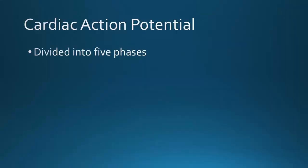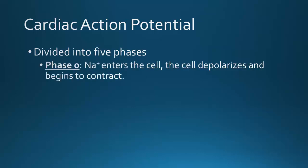We're going to talk about the five phases of the cardiac action potential. If you're using the eighth edition of Nancy Caroline's Emergency Care in the Streets, this information can be found on page 969. Phase zero begins when the cardiac muscle cell receives an impulse — it receives the stimulus.